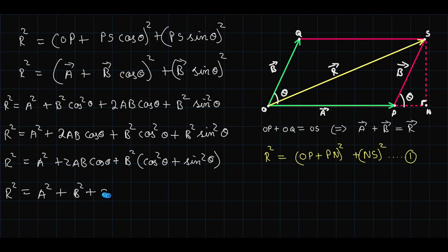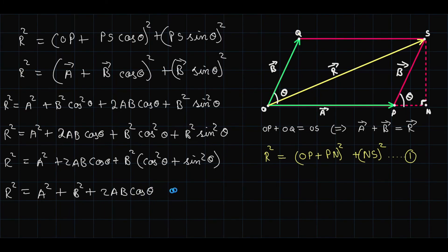which equals R equals square root of A squared plus B squared plus 2AB cos theta. Now this expression will give us the magnitude of this resultant over here.